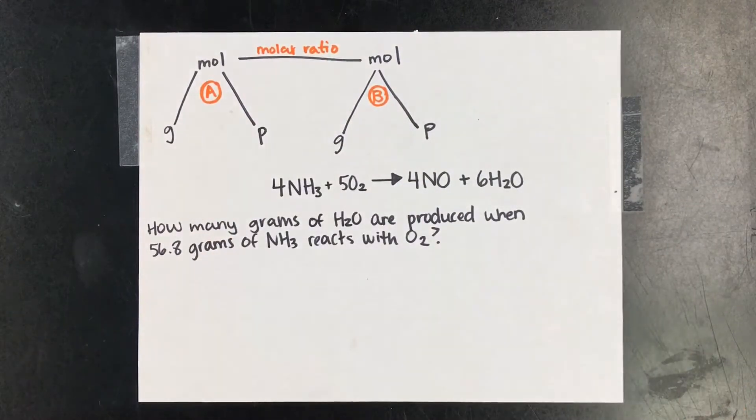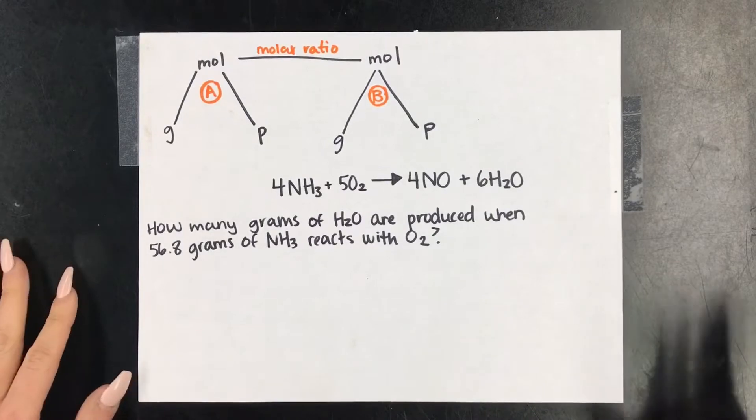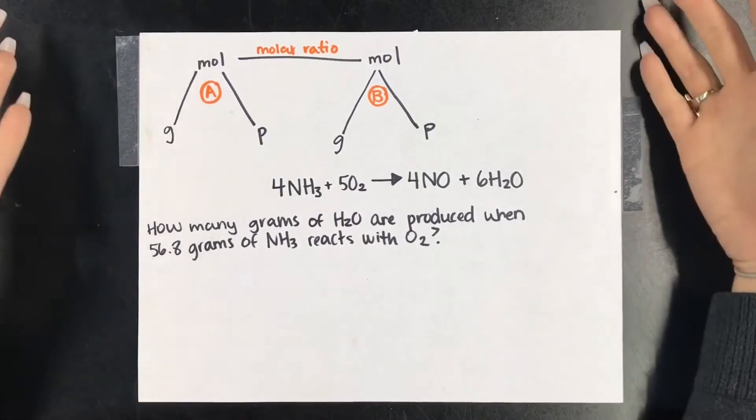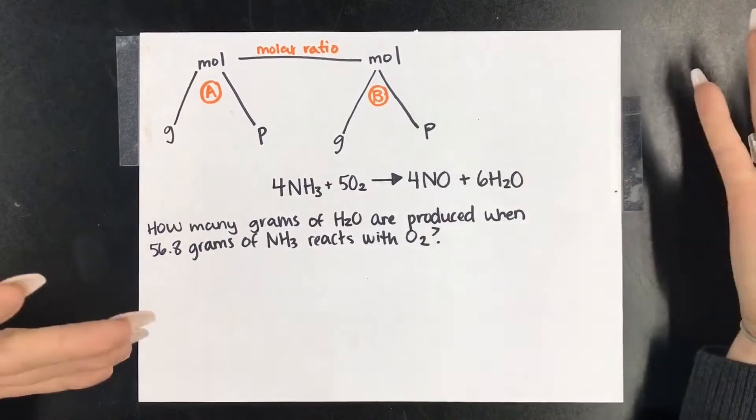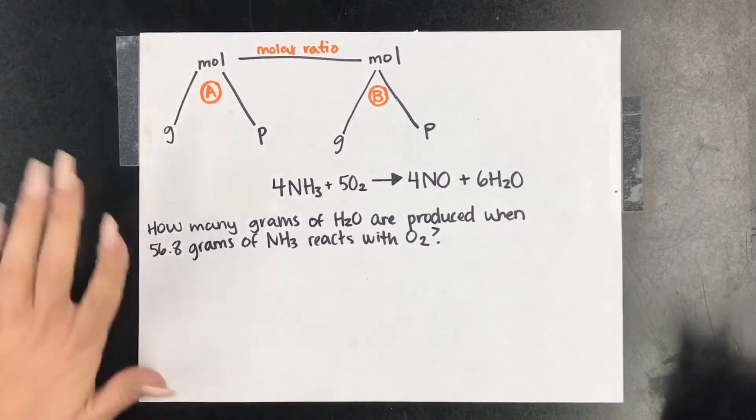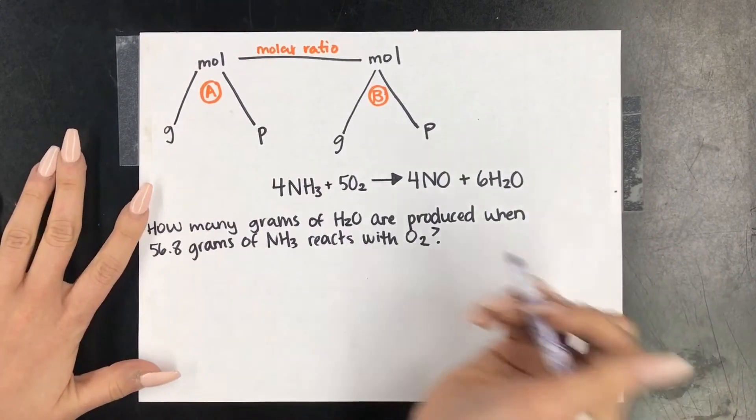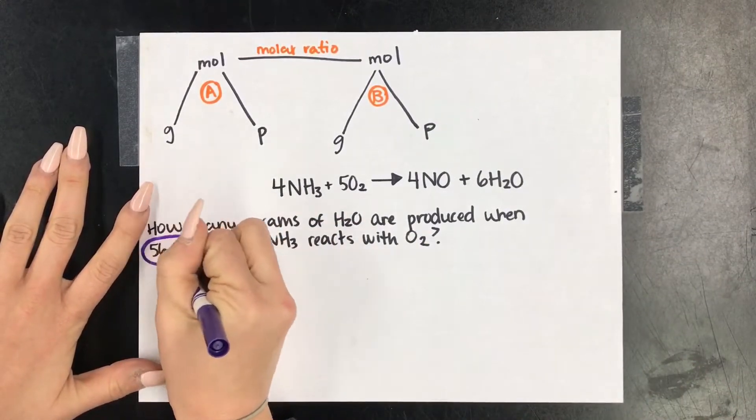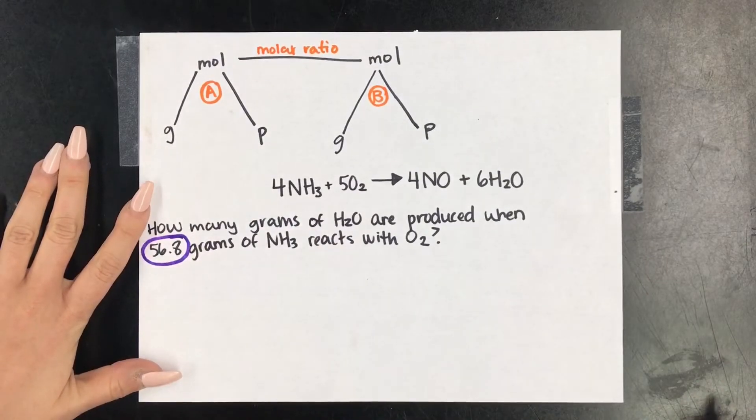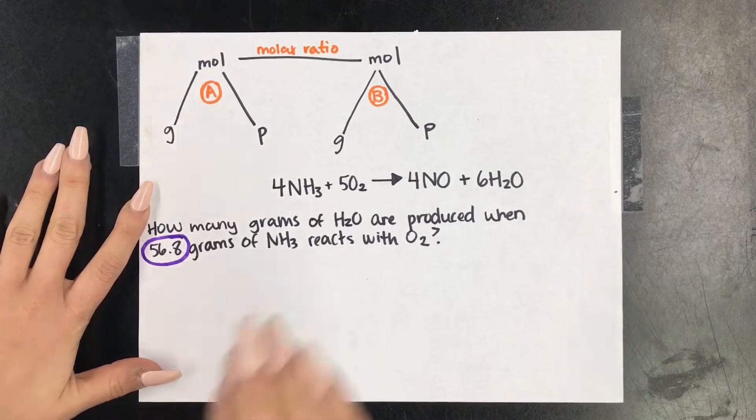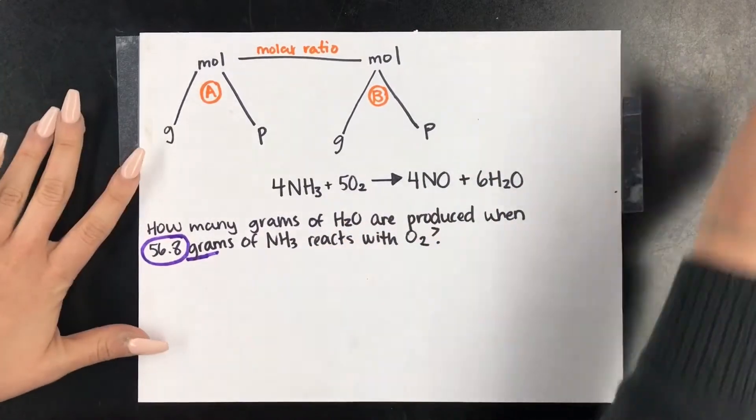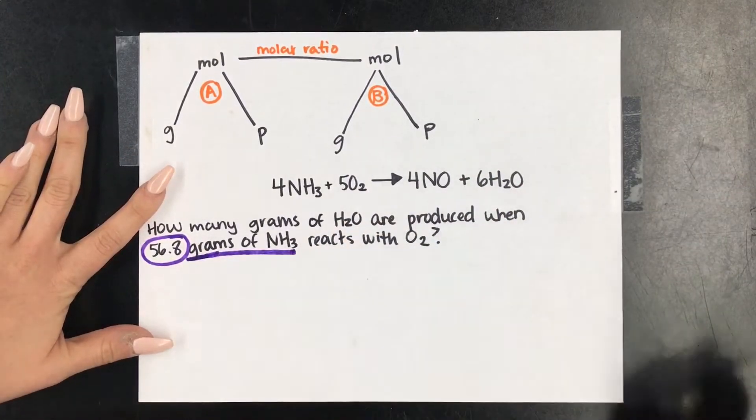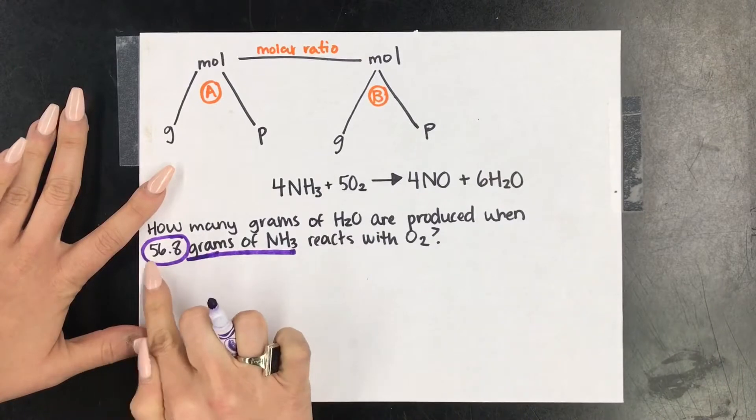But let's start where we always start and that is annotation, because one of the hardest things about the double mole mountain problems is sometimes students struggle figuring out where they start. But not you guys because you are great annotators. So we're going to circle our numbers and then we're underlining units. We're looking for grams, moles, or particles, which is atoms or molecules.